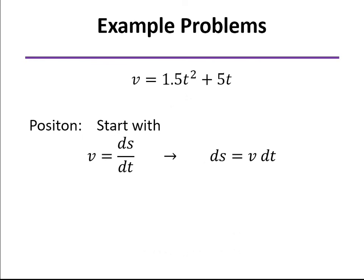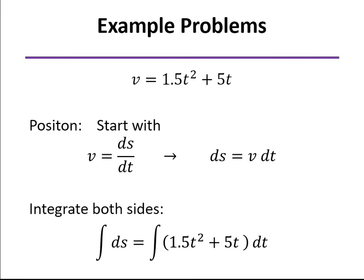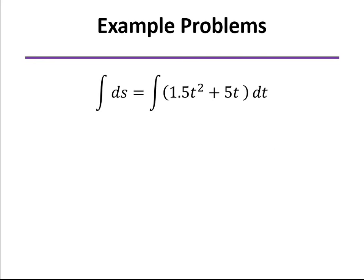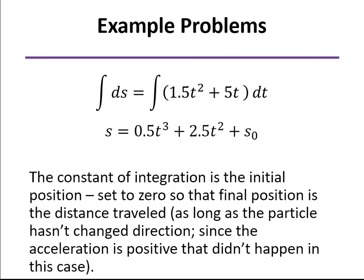To find the position, you can plug in five seconds to find what the velocity is. To find the position, we start with that equation of velocity equals ds/dt. We integrate ds to find the position at any point in time. And substitute in your value of five seconds to find the position. And that will be the distance traveled as long as the particle didn't change direction. We'll work a problem like that in the next class.